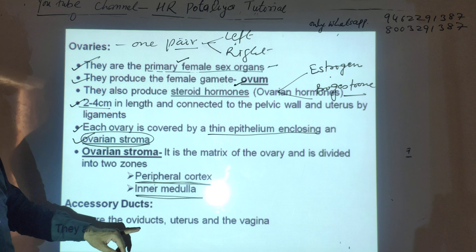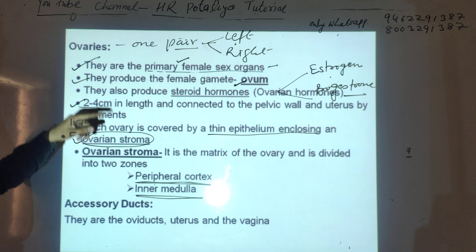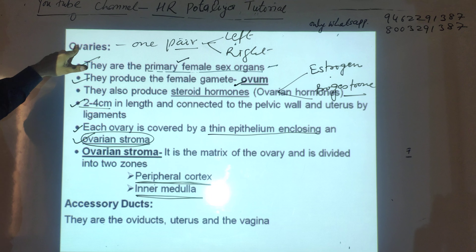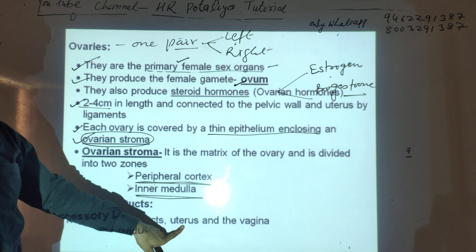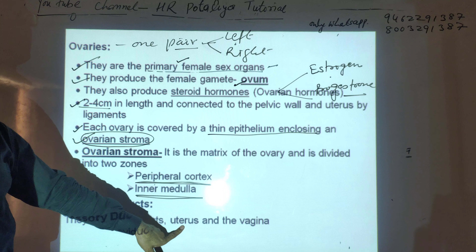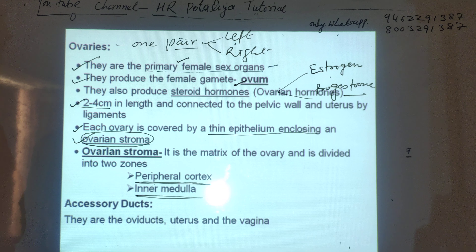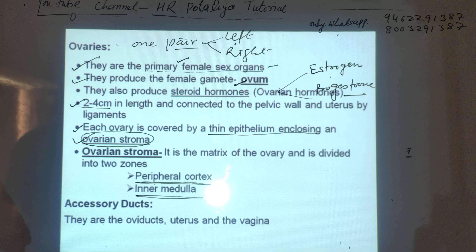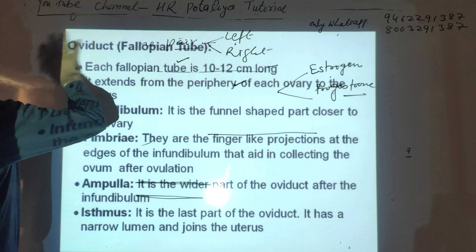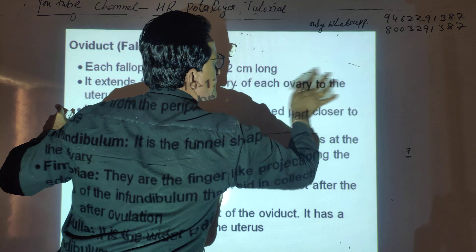In case of accessory ducts, one oviduct emerges from each ovary. Both oviducts open into the bag-like structure called the uterus. The uterus opens into the tubular structure called the vagina.